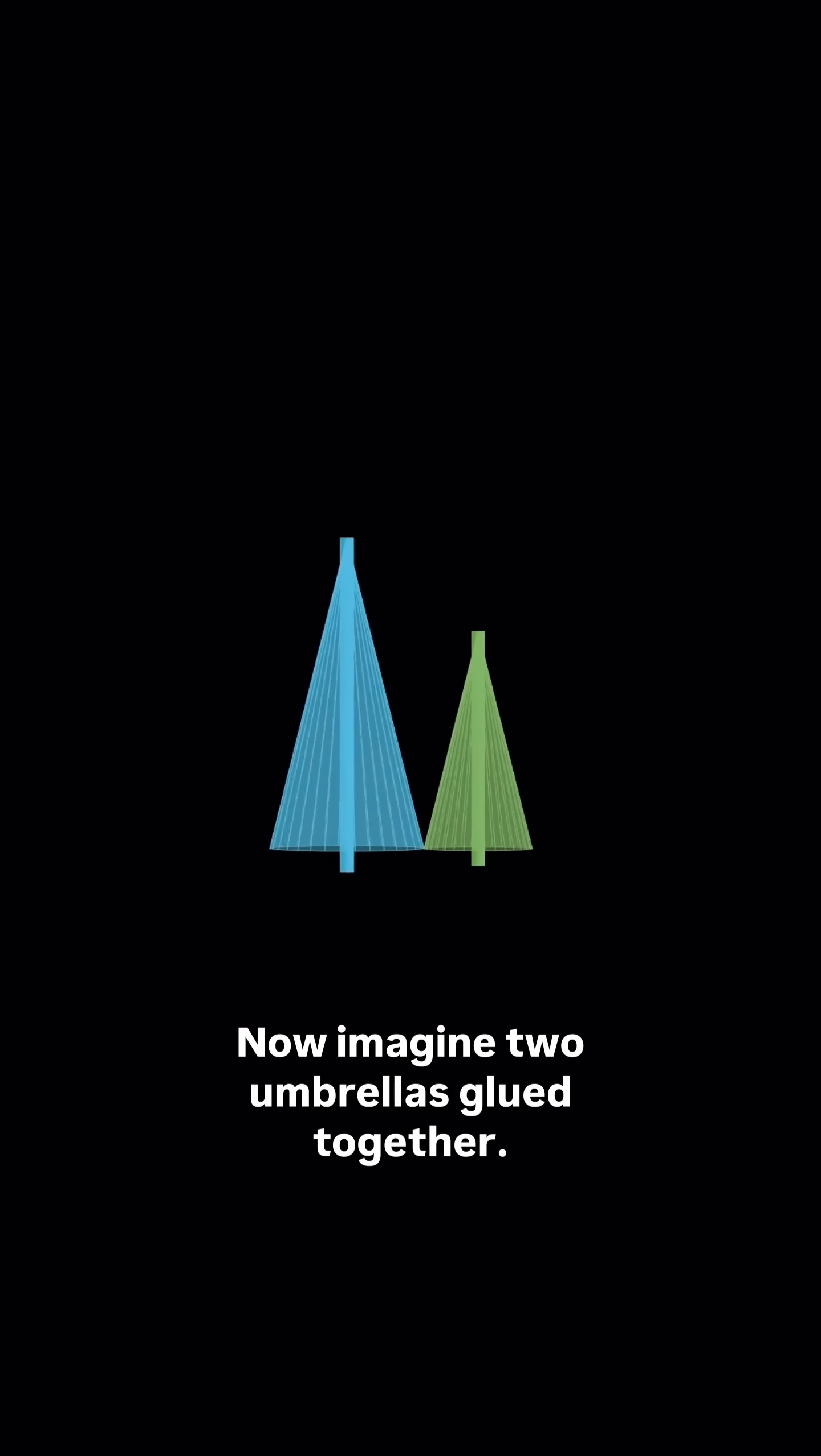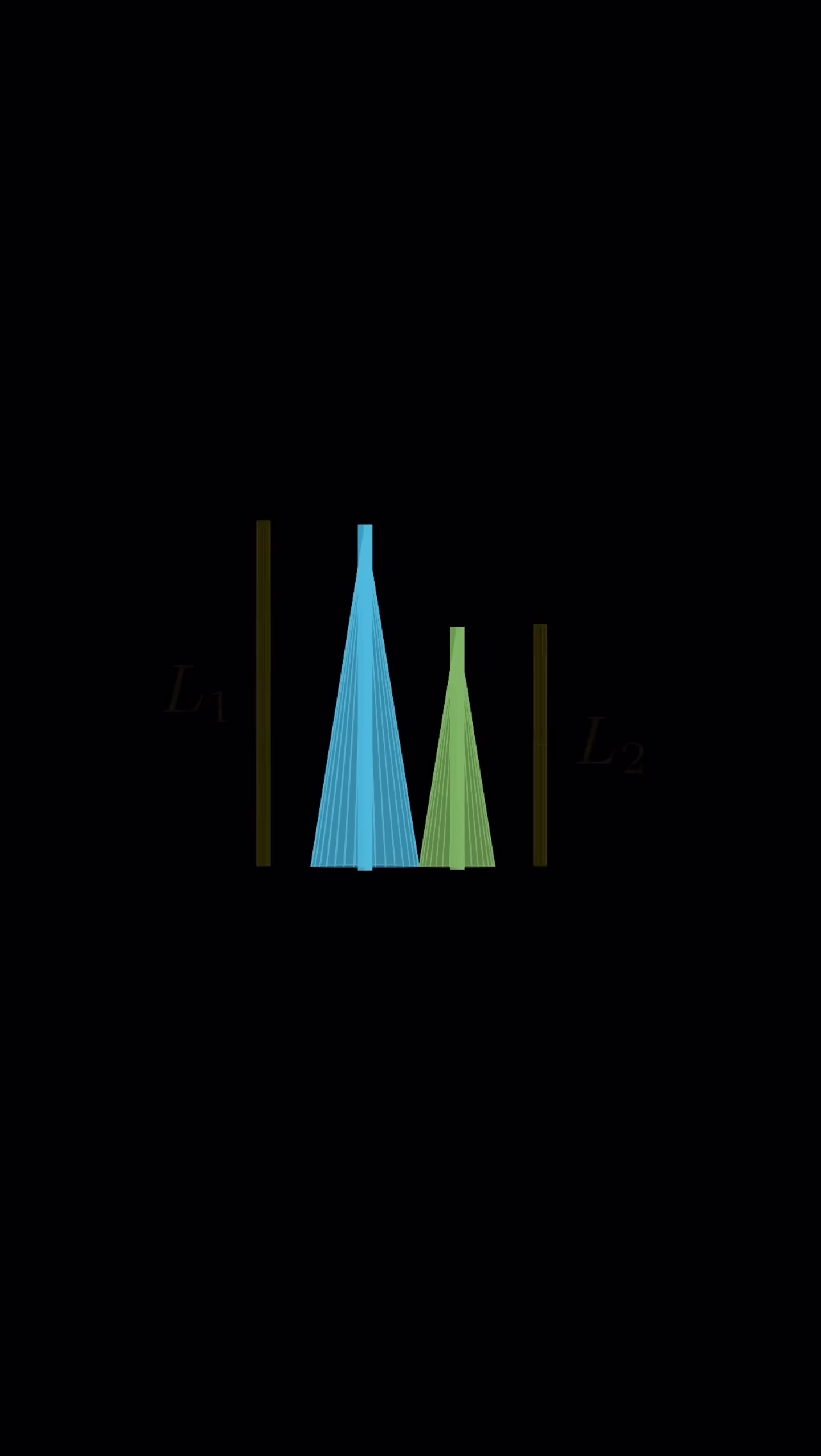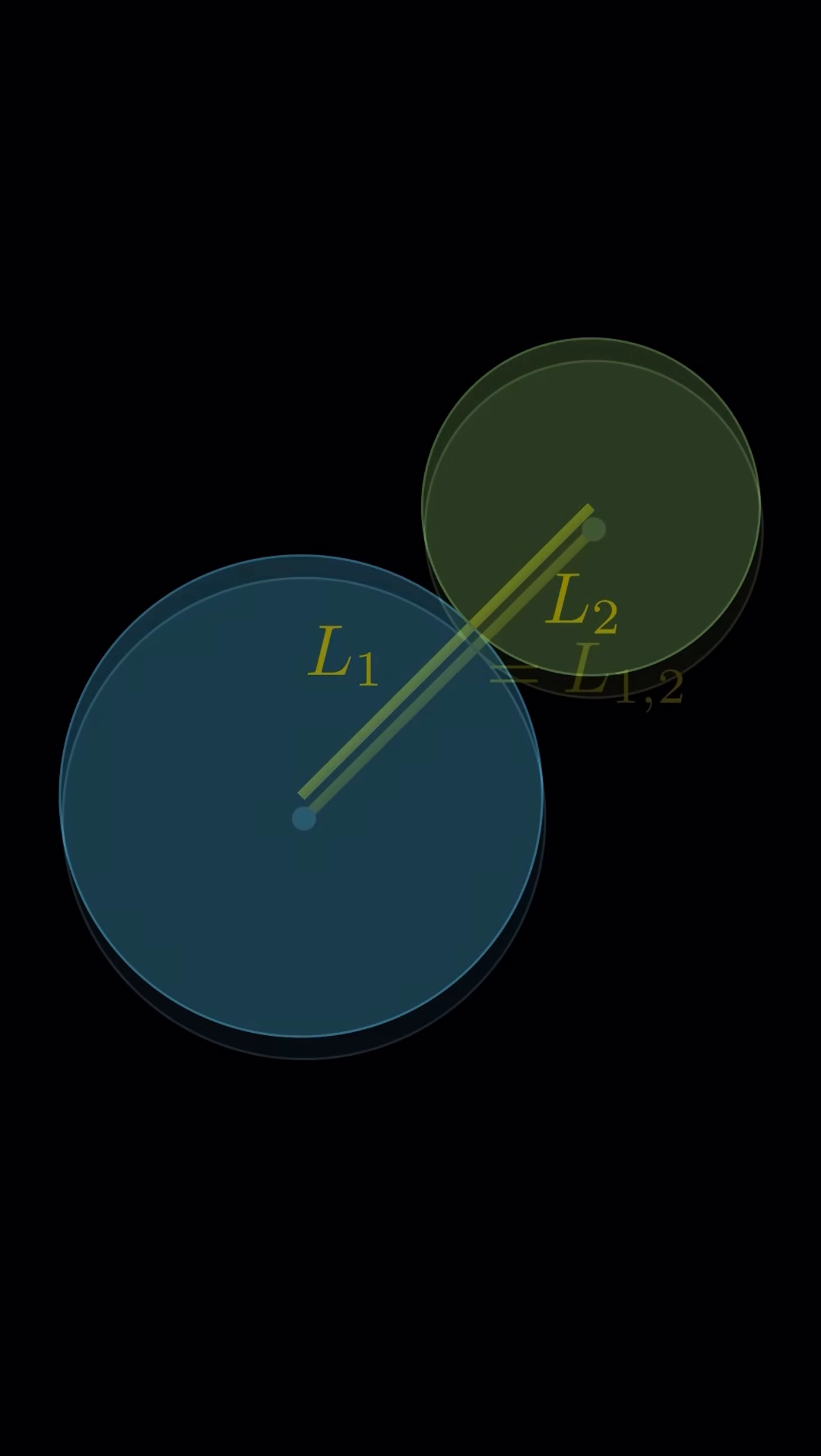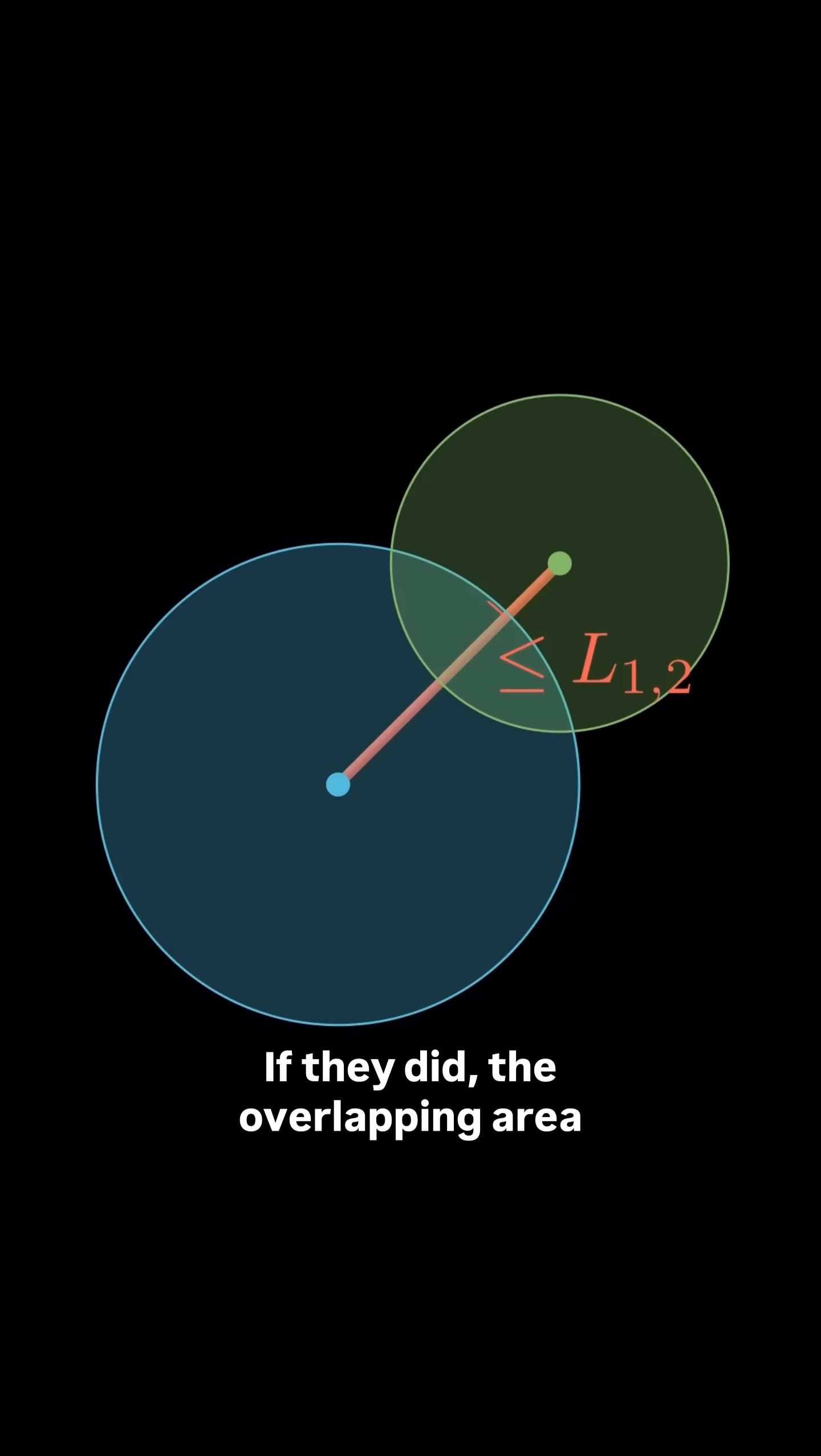Now imagine two umbrellas glued together. If you unfold it, you get two circles, one for each flap. But here's the key: the circles cannot overlap. If they did, the overlapping area would be in two places at once.